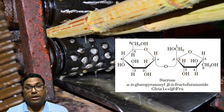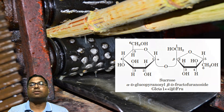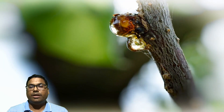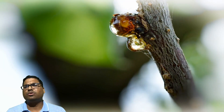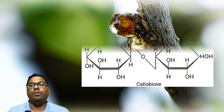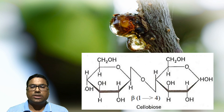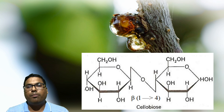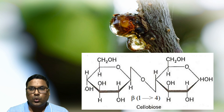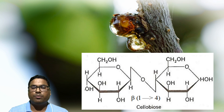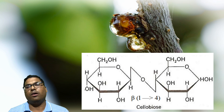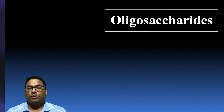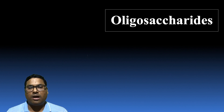The next disaccharide example is found in plants, and it is called cellobiose. Cellobiose is a disaccharide formed by the glycosidic bond between two glucose units, and we observe a beta 1,4 glycosidic bond here. So this is all about the next category, oligosaccharides, in carbohydrates.